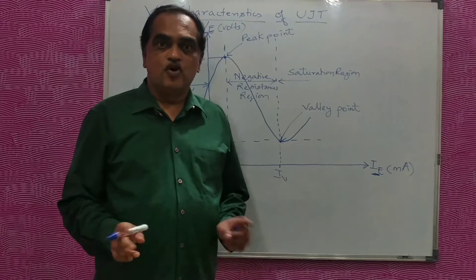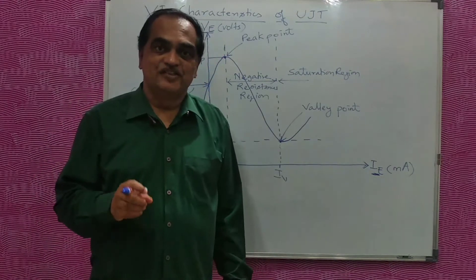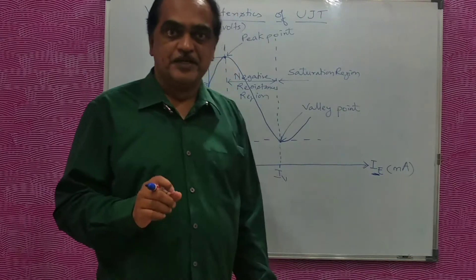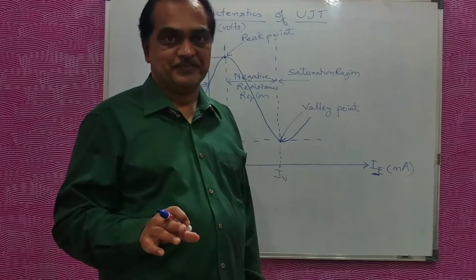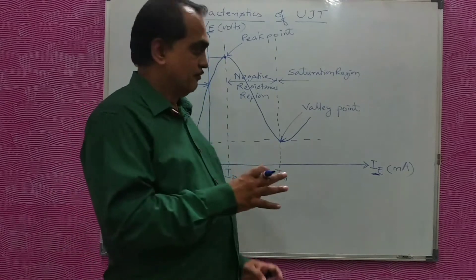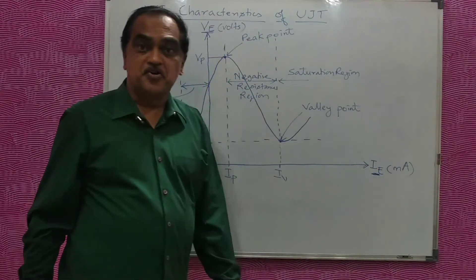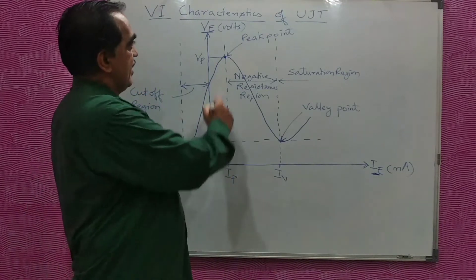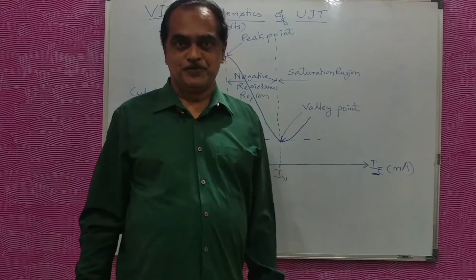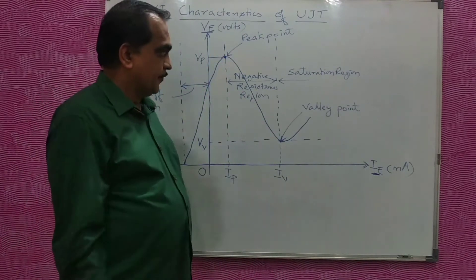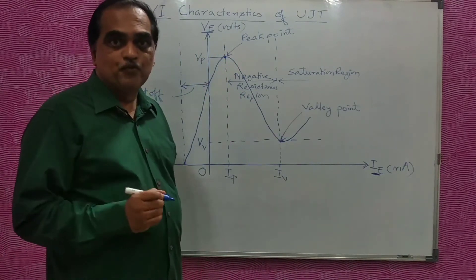This is just opposite to the normal graph. We usually take voltage on the x-axis and current on the y-axis, but here, to show a negative resistance region, we are taking the emitter current on the x-axis and the emitter voltage on the y-axis.